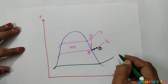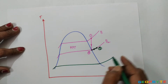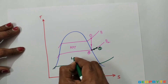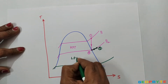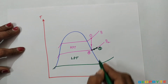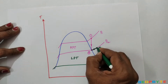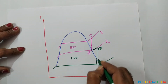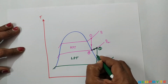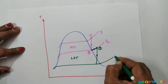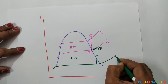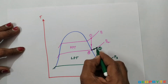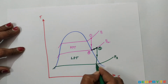After reheating in the boiler, the steam is made to expand in the second stage called the low pressure turbine. When the steam is expanding in the low pressure turbine, the pressure drops from P2 to P3.